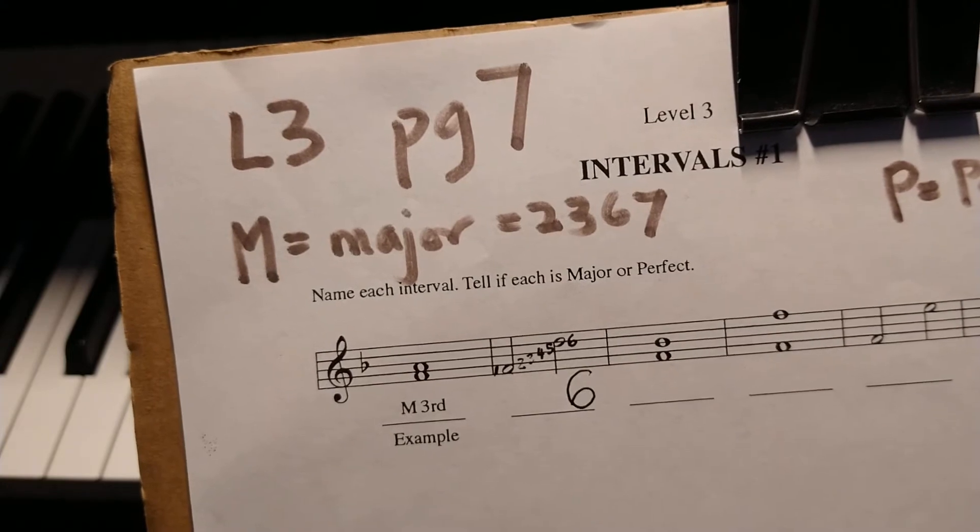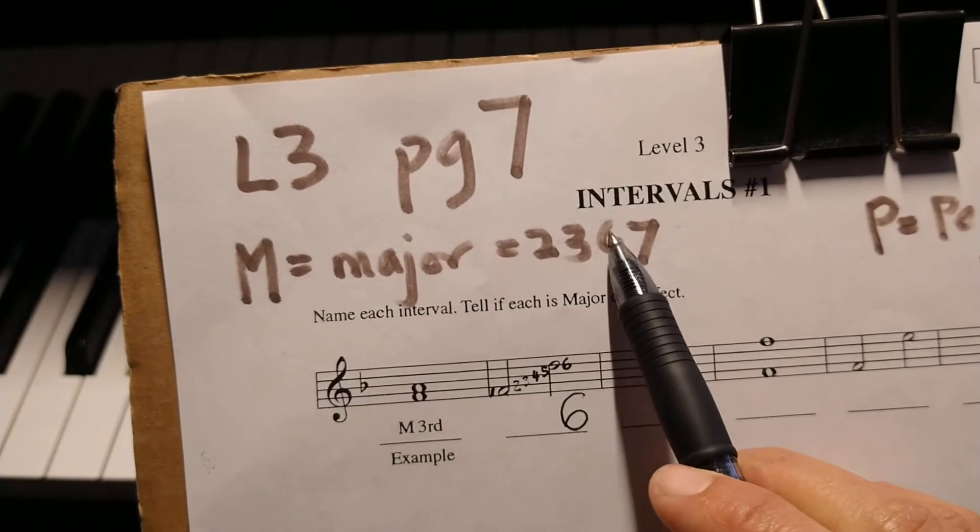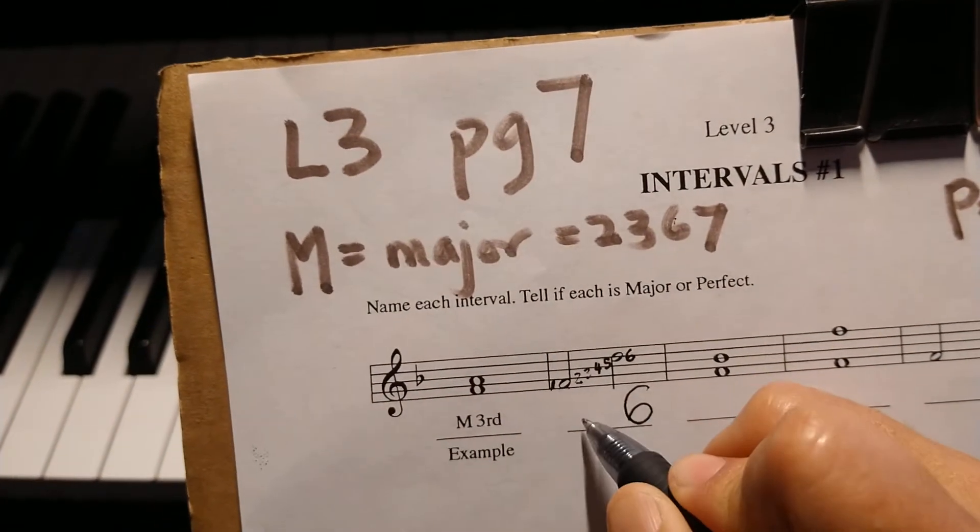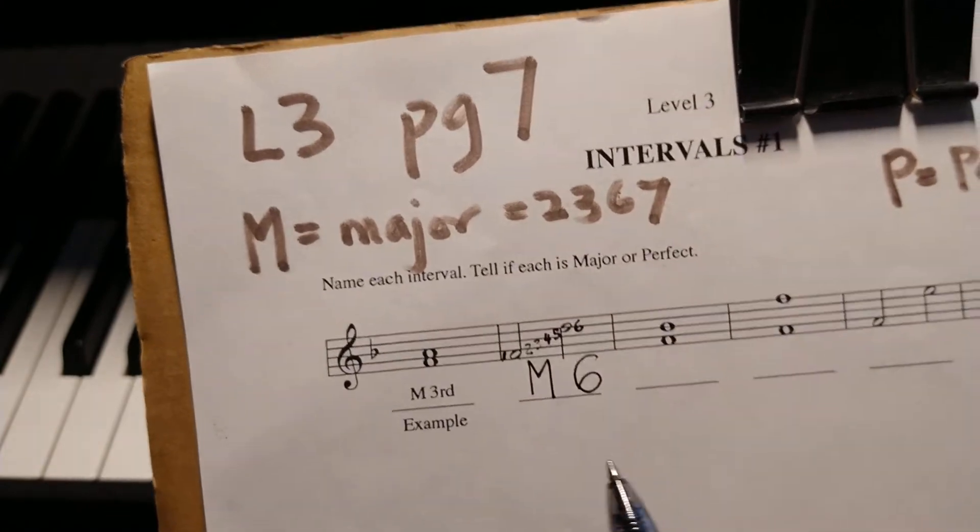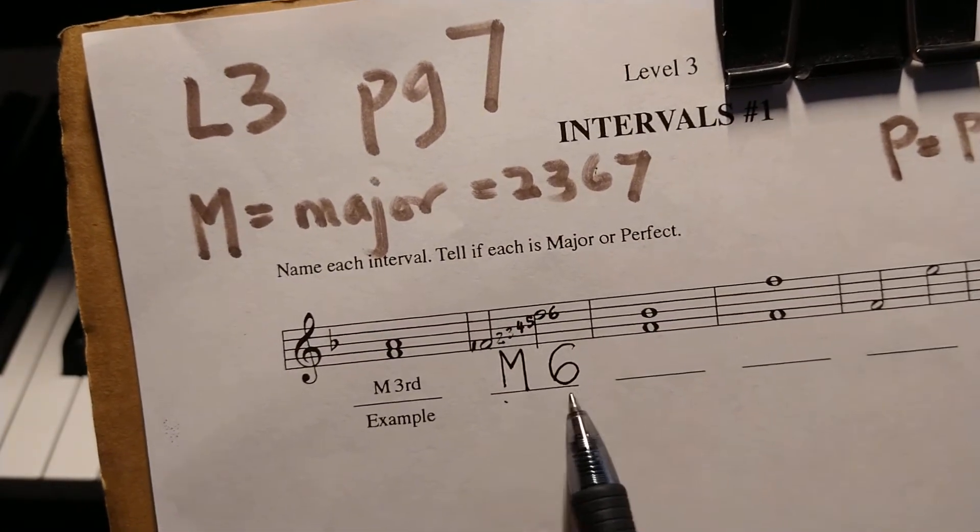For level 3, you're going to add one more part. For the 6, you're going to write a big M in front of it so that people know this is major 6.